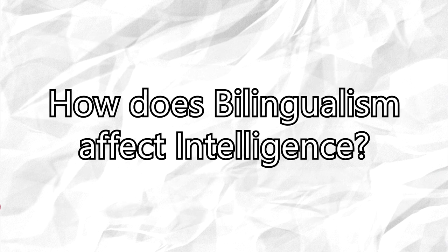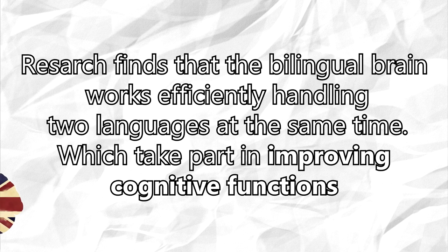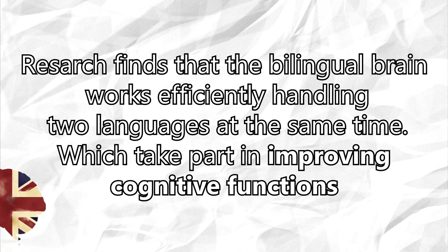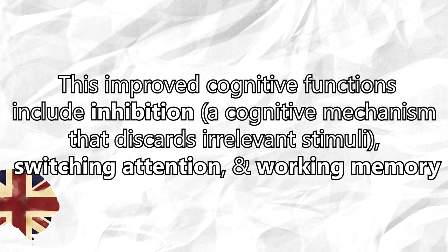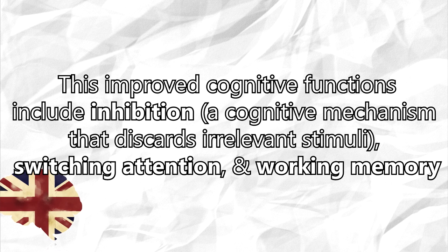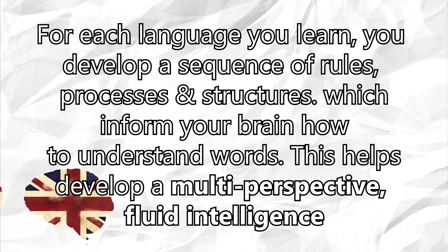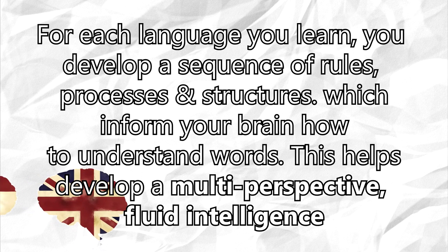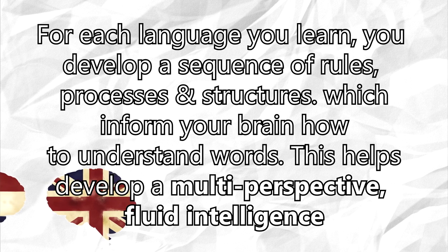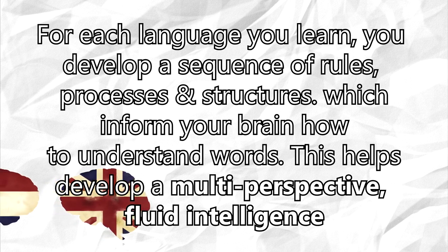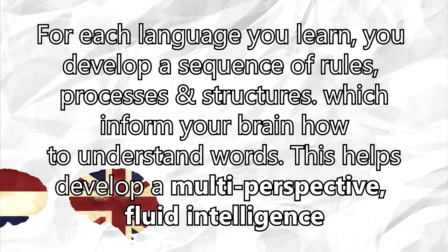How does bilingualism affect intelligence? Research finds that the bilingual brain works efficiently in handling two languages at the same time, which improves cognitive functions. These improved cognitive functions include inhibition — a cognitive mechanism that discards irrelevant stimuli — switching attention, and working memory. For each language you learn, you develop a sequence of rules, processes, and structures which inform your brain how to understand words, helping develop a multi-perspective fluid intelligence.